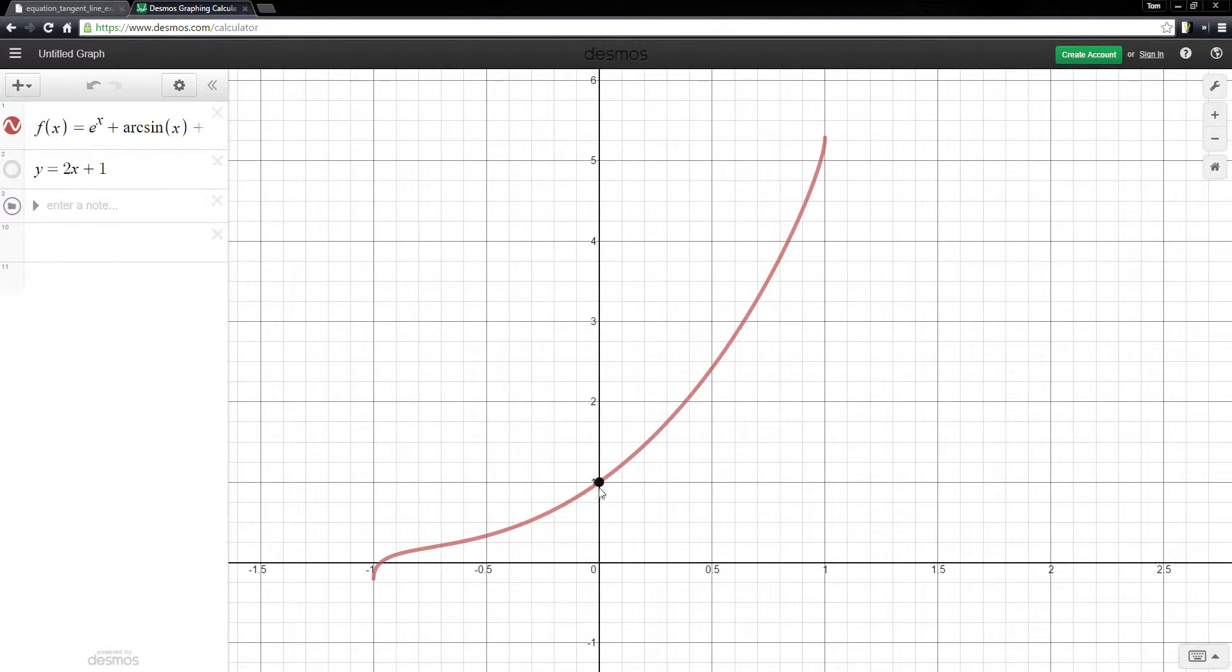And then here's the point, 0, 1 right here. And if I graph out the tangent line, you can see that it just sort of skims along right in here.